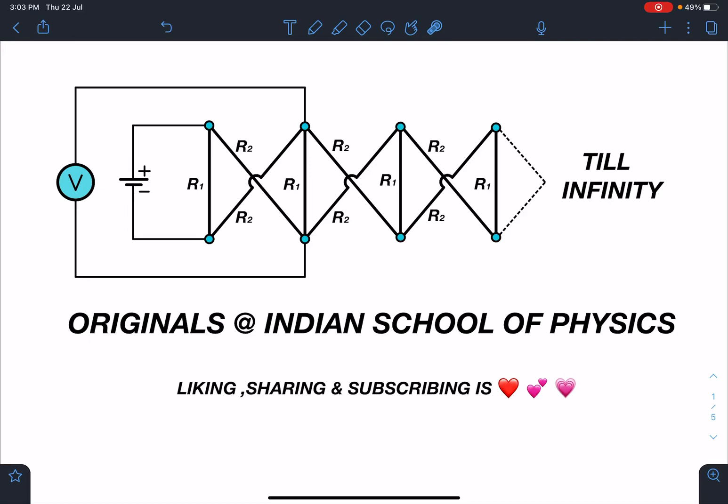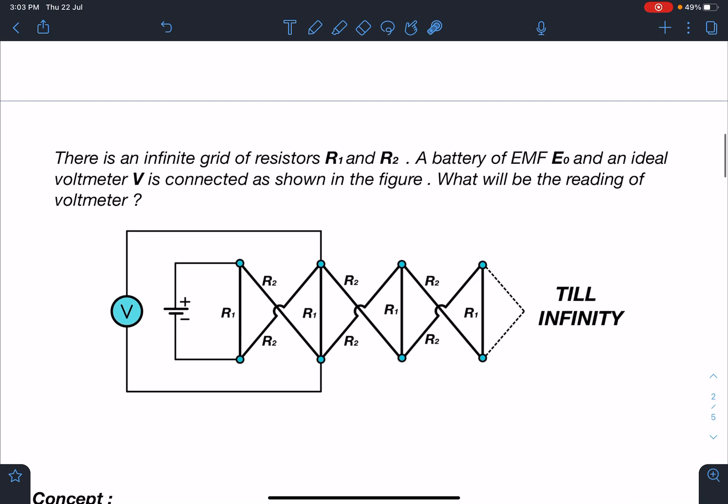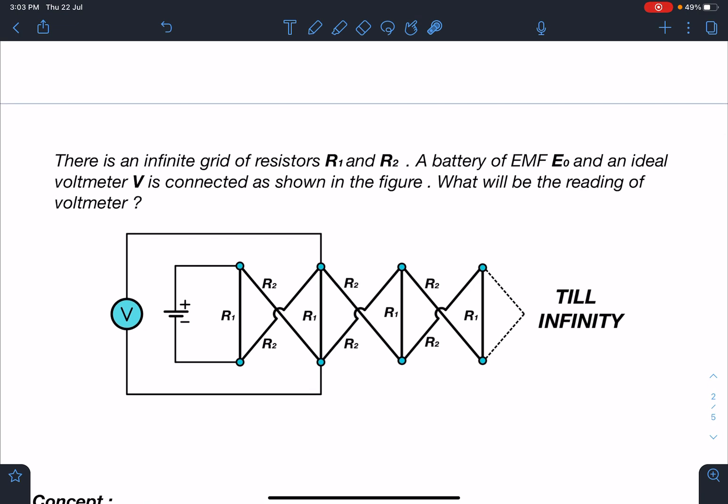Hello everyone, welcome to my channel Indian School of Physics. Today I have come up with a very amazing problem, it's an original problem. Liking, sharing, subscribing is love, so keep sharing, keep liking and subscribing. Here is the problem statement: there is an infinite grid of resistors R1 and R2, a battery of EMF E0, and an ideal voltmeter V is connected as shown in the figure. What will be the reading of this voltmeter?